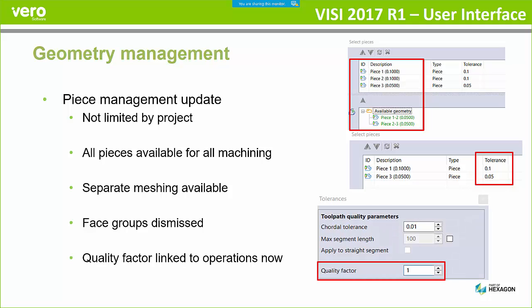The quality factor is now linked to the operations again. This used to be linked to the project. The quality factor is effectively a scaling factor being applied to some of the toolpath parameters in the background. It's mainly used for small components — very small pieces — where you're trying to get more points in the toolpath to increase the quality of the piece and the machining finish. If you put a value of 1, it's just 1 to 1, but if you increase that quality factor to 5 or 10, we scale the part by that amount, calculate the toolpath, and then scale everything back down by the same amount to increase the number of points on the toolpath. So that's why we use this quality factor, but it's now linked to individual operations again.